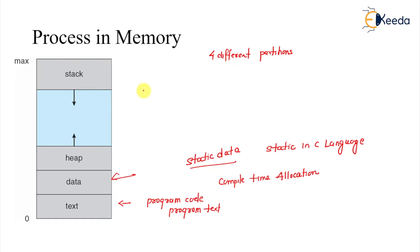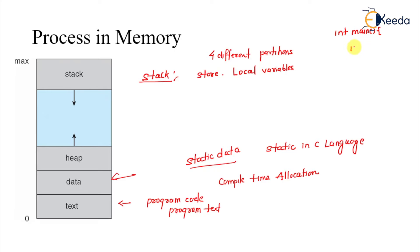The next parts are the stack and the heap. The prime utility of the stack is to store local variables. For example, if you write int main as a function and declare int a, and then there is a function call f1 followed by a printf statement, that variable 'a' will be loaded into the stack part of main memory.